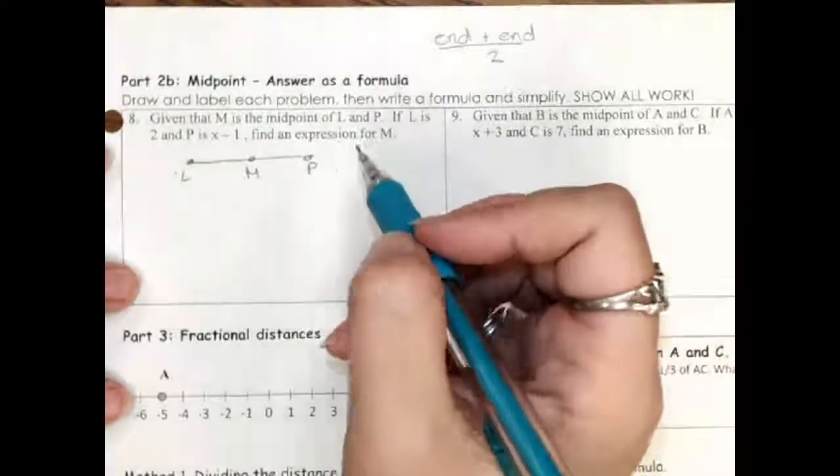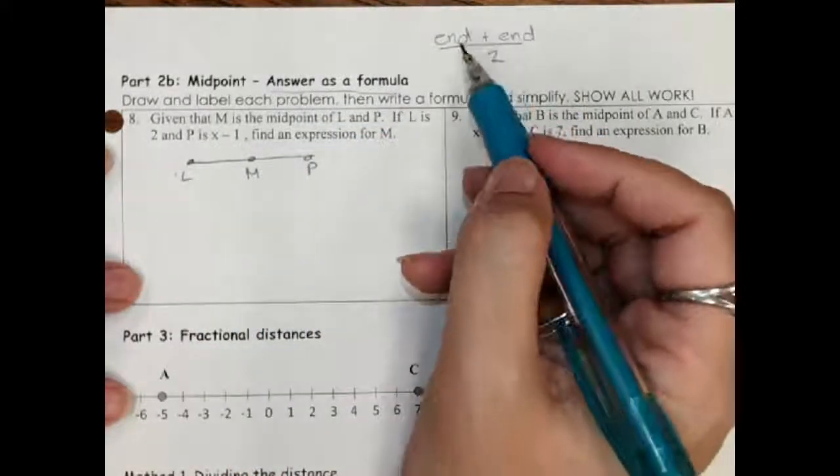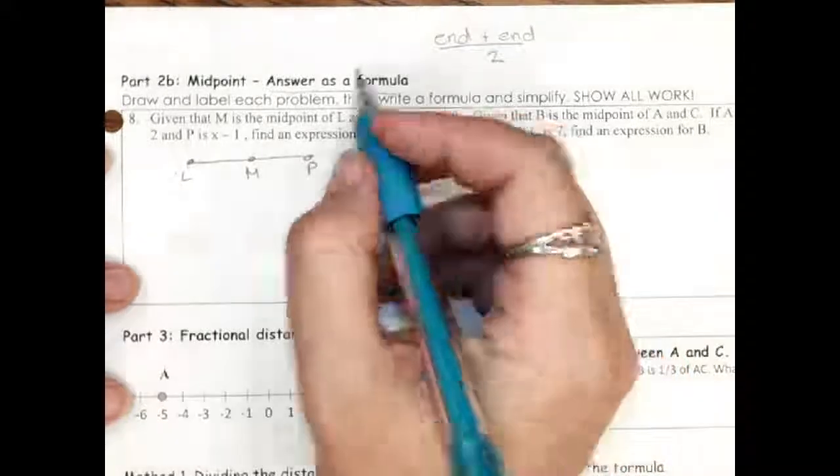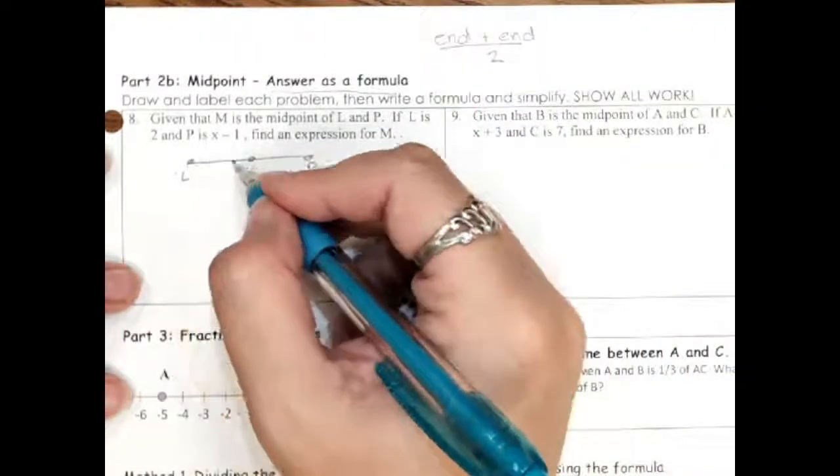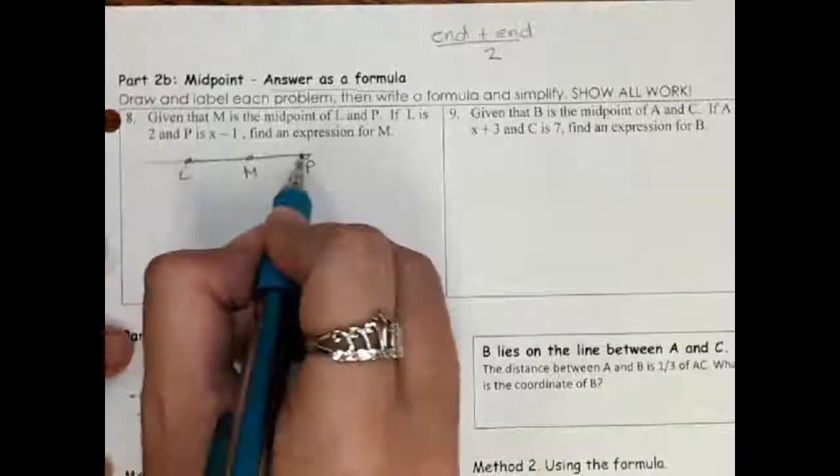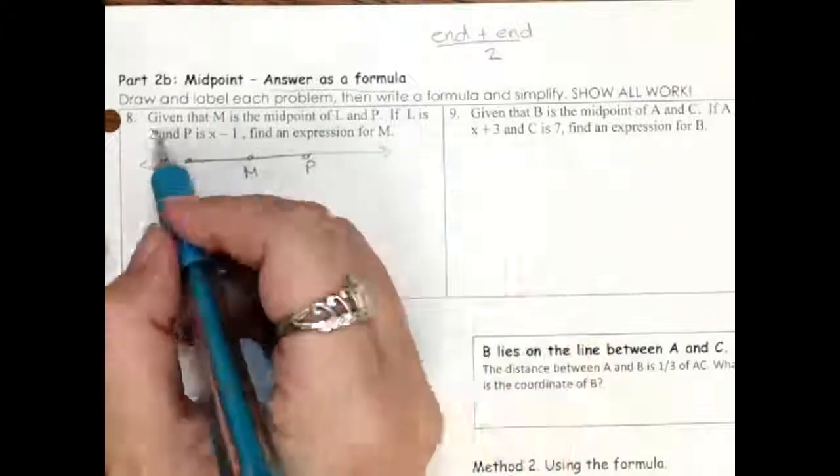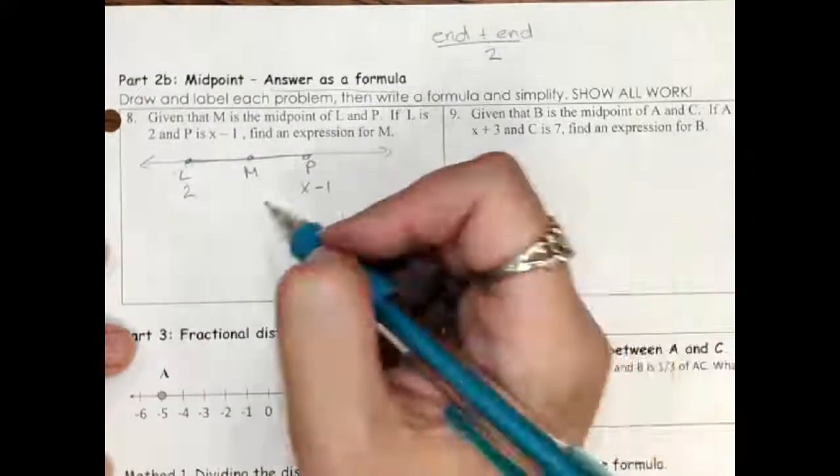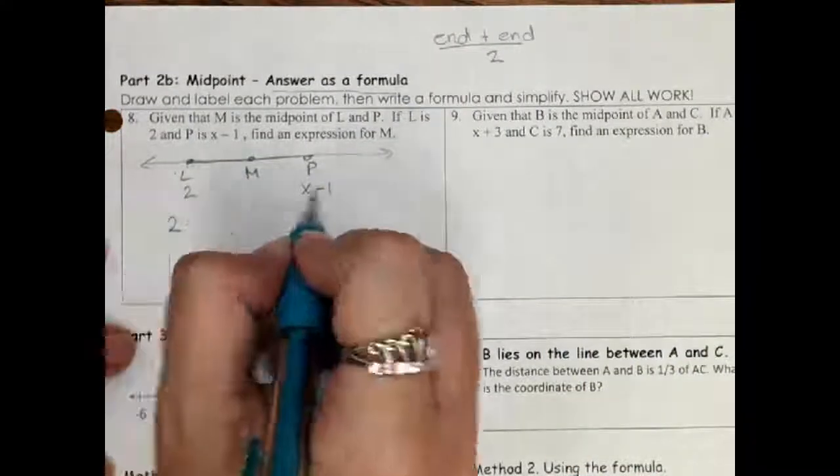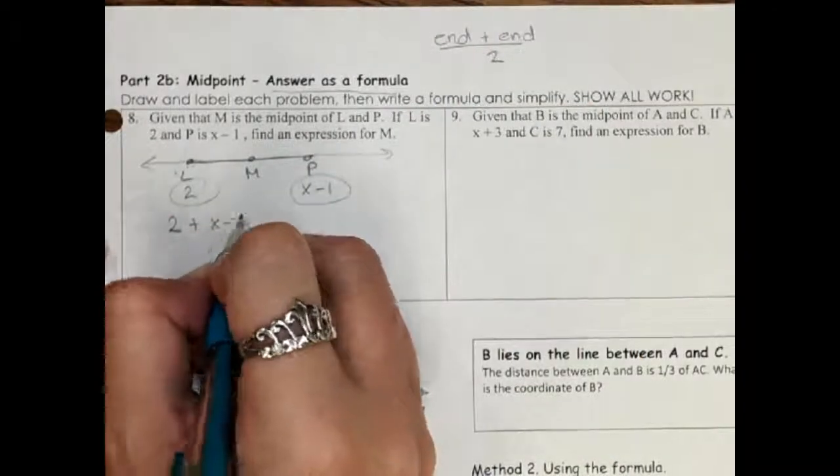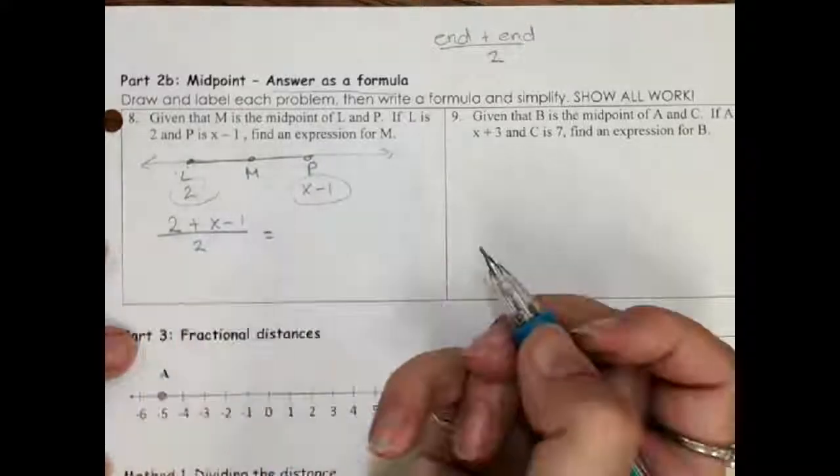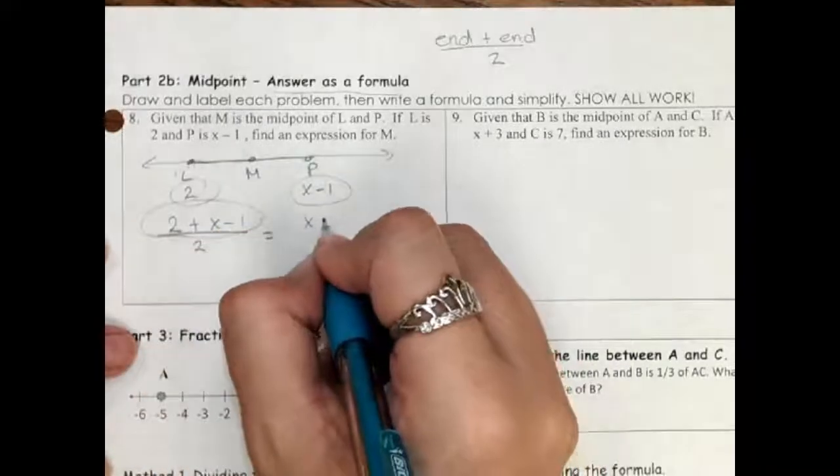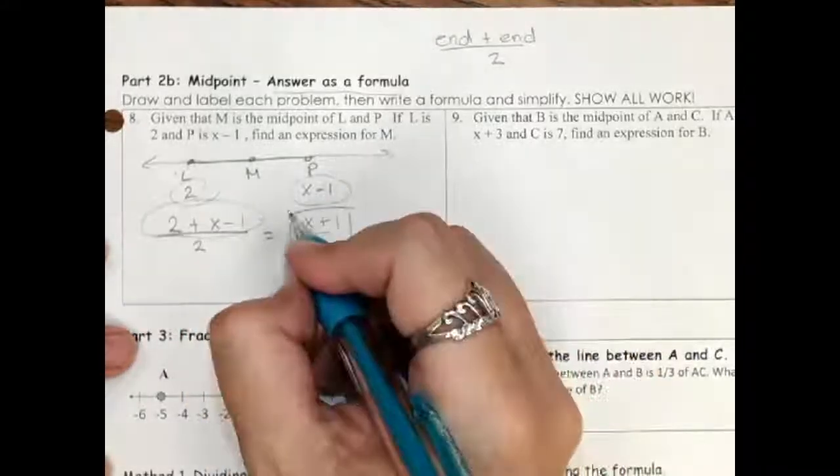The next ones we're going to use, the answer is going to be a formula. And you'll remember that when we did this on the warm-up, one end plus the other end divided by 2 gets me where the middle is. And that's what we're going to use on this. So I'm going to label this again. It tells me this time, it's not telling me how long each section is. It's telling me if I put this on a number line, L is at 2, and P is at x minus 1, and I want to know where M is. So all that I need to do is plug these in the formula. 2 is one end. X minus 1 is the other end. And I divide by 2. So this is just to simplify the algebra. I combine like terms on top. I've got x, and then 2 minus 1 is positive 1 over 2. And that's all we do. That's where M is on this number line.